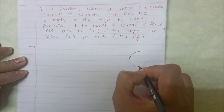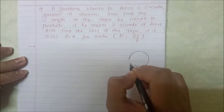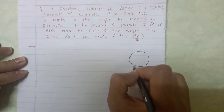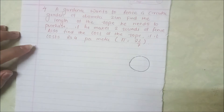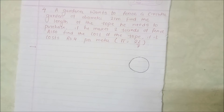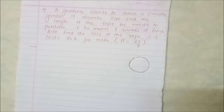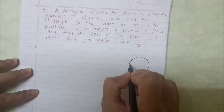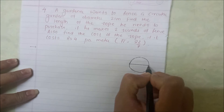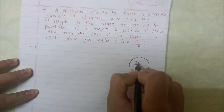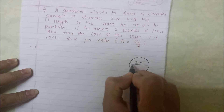It is a circular garden and the gardener wants to fence it — wants to make a boundary around it. The diameter of this circular garden is 21 meters.